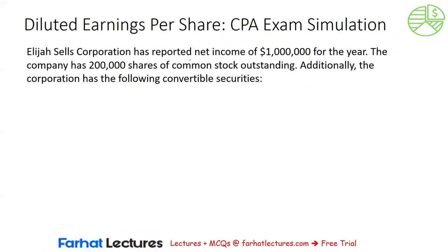Elijah Says Corporation has reported net income of $1 million for the year. The company has 200,000 shares of common stock outstanding. The good news in this exercise is that we don't need to compute the weighted average of common stock outstanding because it is already provided as 200,000. Additionally, the corporation has the following convertible securities.